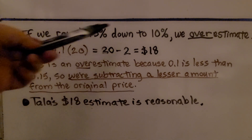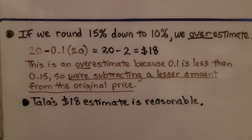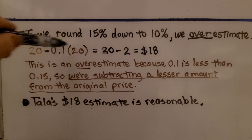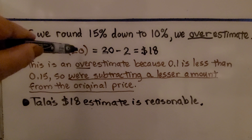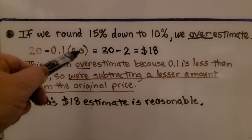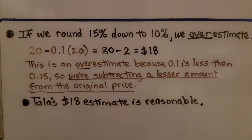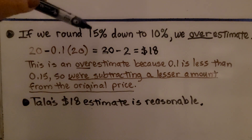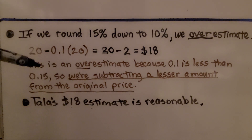If we round the 15% down to 10%, we overestimate. We round the 21 to 20 and write 10% as 0.1, then multiply that by the 20 we rounded from 21. That gives us 20 minus 2, which is $18. This is an overestimate because 0.1 for 10% is less than 0.15 for 15%, so we're subtracting a lesser amount from the original price. And Tala's $18 estimate is reasonable.